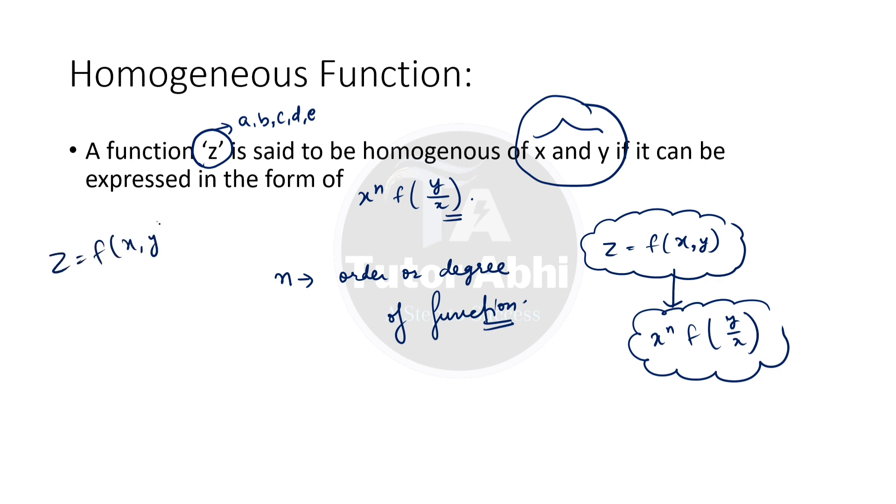If z equals function of x, y is homogeneous, when we find partial z upon partial x and partial z upon partial y, both will also be homogeneous with degree n minus 1. If the main equation is homogeneous with degree n, then partially differentiating with respect to x and y will also be homogeneous with degree n minus 1.